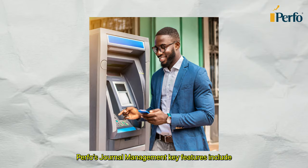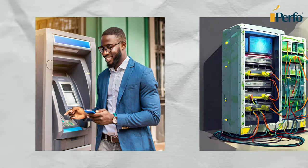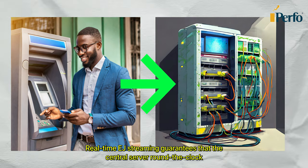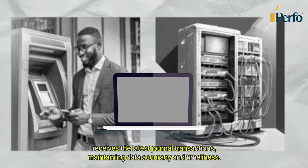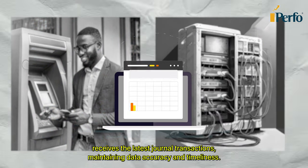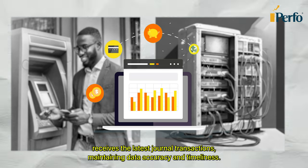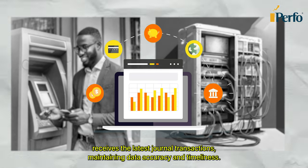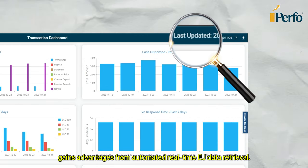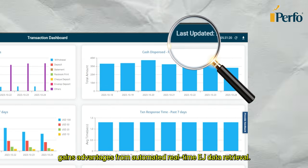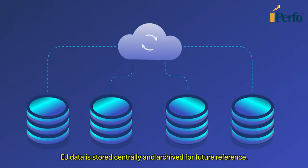Perfo's journal management key features include real-time EJ streaming, which guarantees that the central server round-the-clock receives the latest journal transactions, maintaining data accuracy and timeliness. The entire multi-vendor ATM network gains advantages from automated real-time EJ data retrieval, and EJ data is stored centrally and archived for future reference.